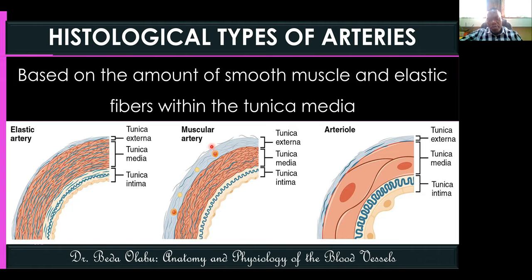The second type is the muscular artery, which has mostly vascular smooth muscle within the tunica media. Muscular arteries are the most common type in the body — examples include the femoral artery and the brachial artery.